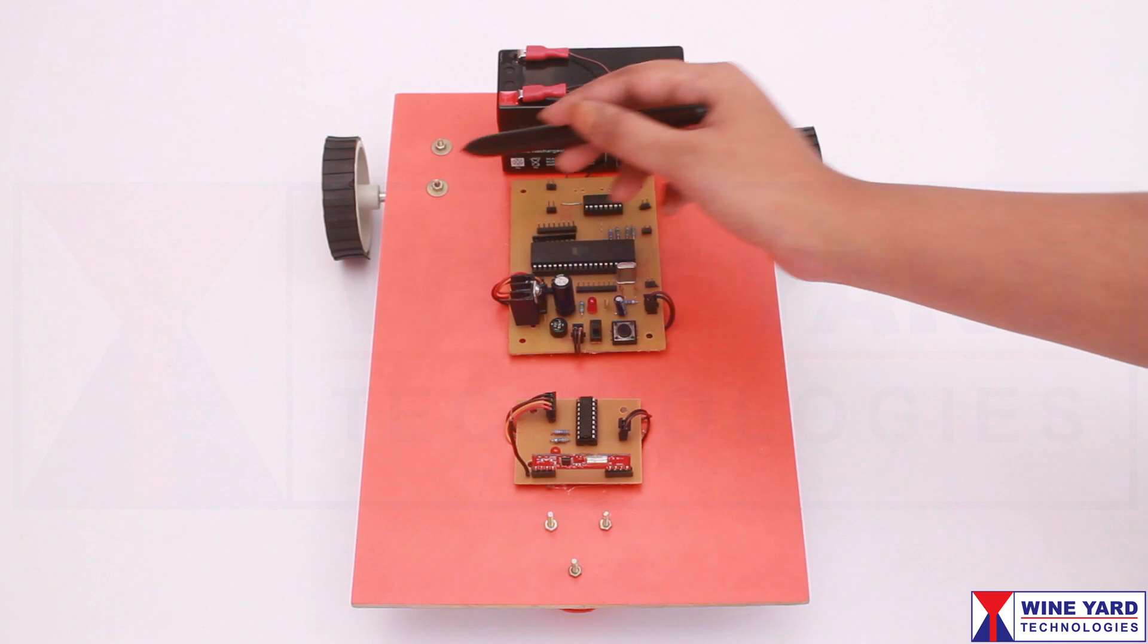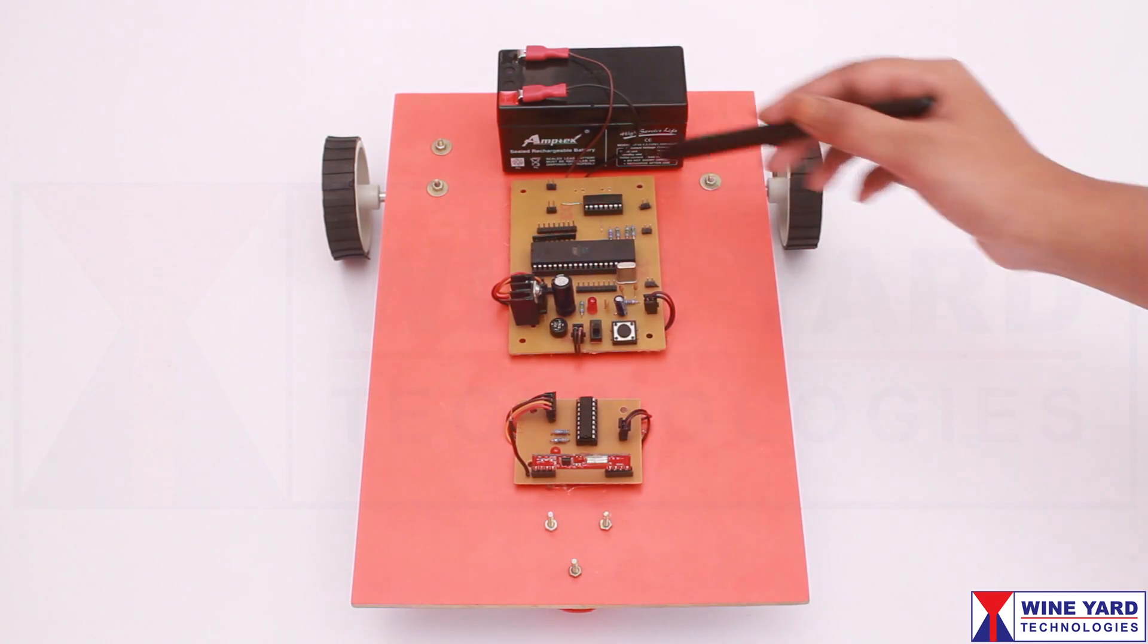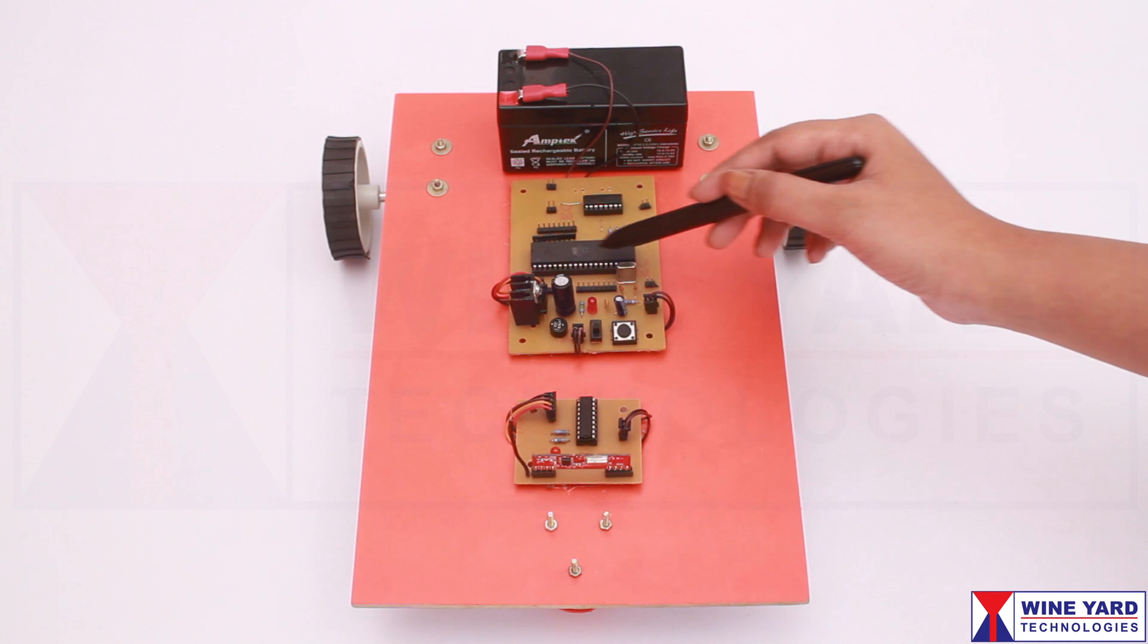60 RPM geared DC motors are fitted to this robot. These motors are driven by the microcontroller through this H-bridge.